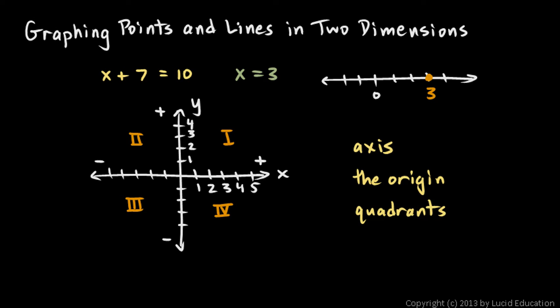And these two axes, arranged in this way, are called a Cartesian coordinate system.